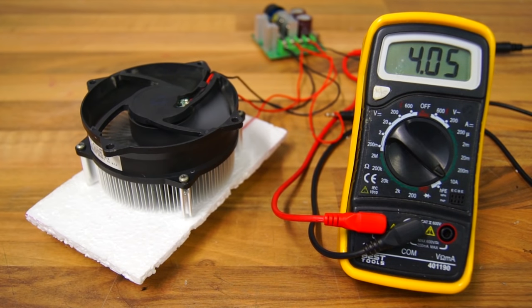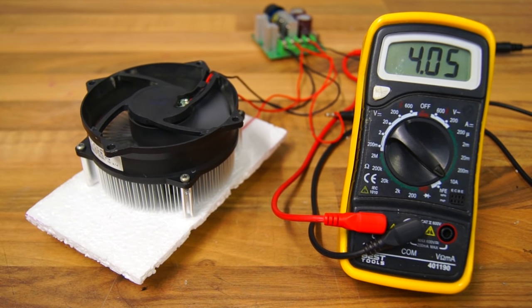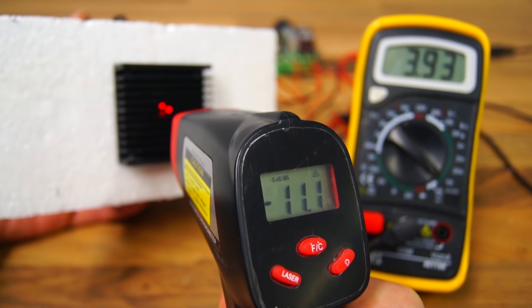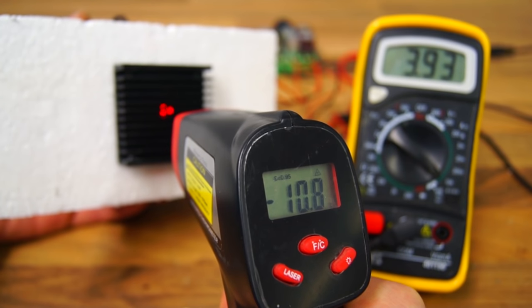Before I assembled the entire thing I did a quick test to see the current draw. With both the fan and the Peltier connected it peaked at 4.1 amps. The cold side reached a temperature of negative 11 degrees Celsius.